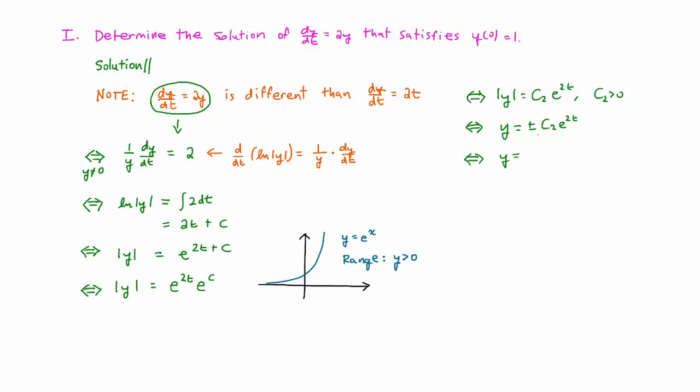Now we can simplify the solution by replacing plus or minus c2 with a new constant, c3, which can be any real number that's positive or negative. It just cannot be zero.